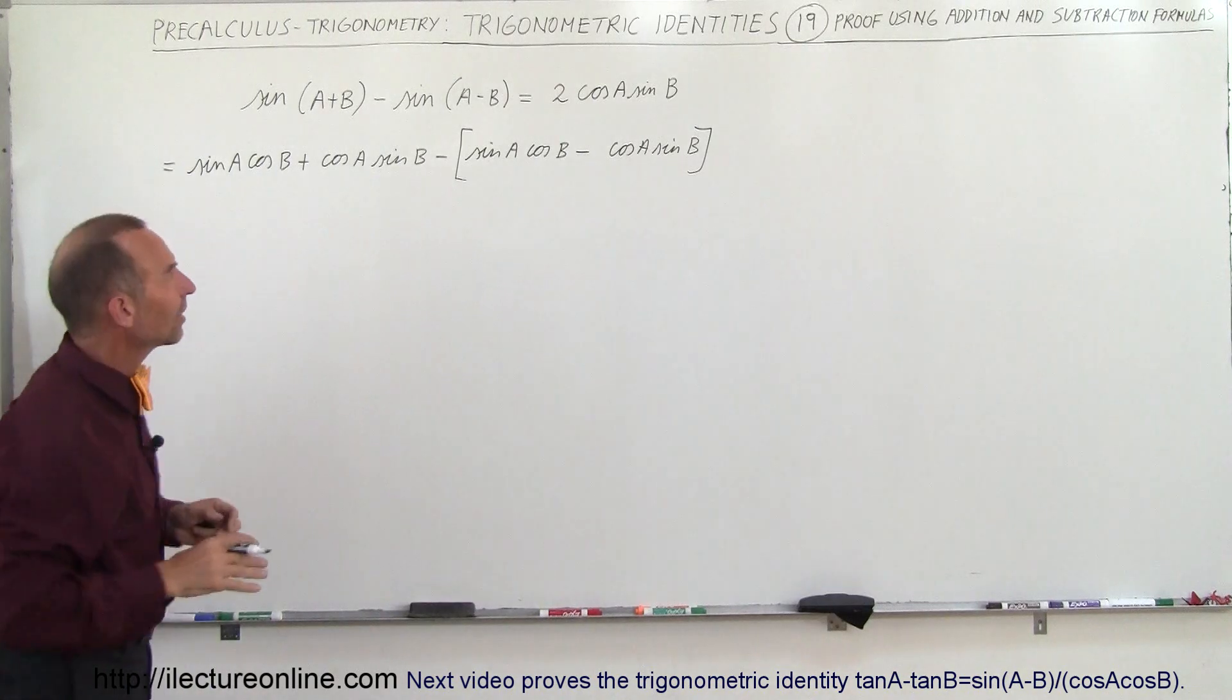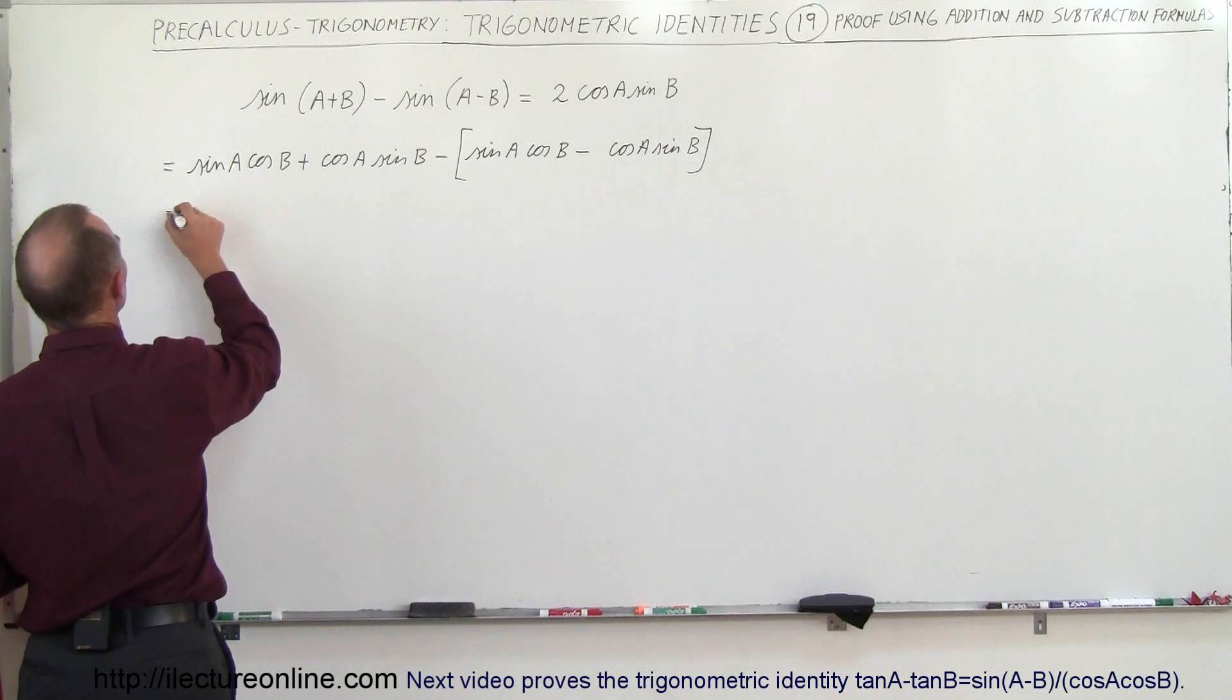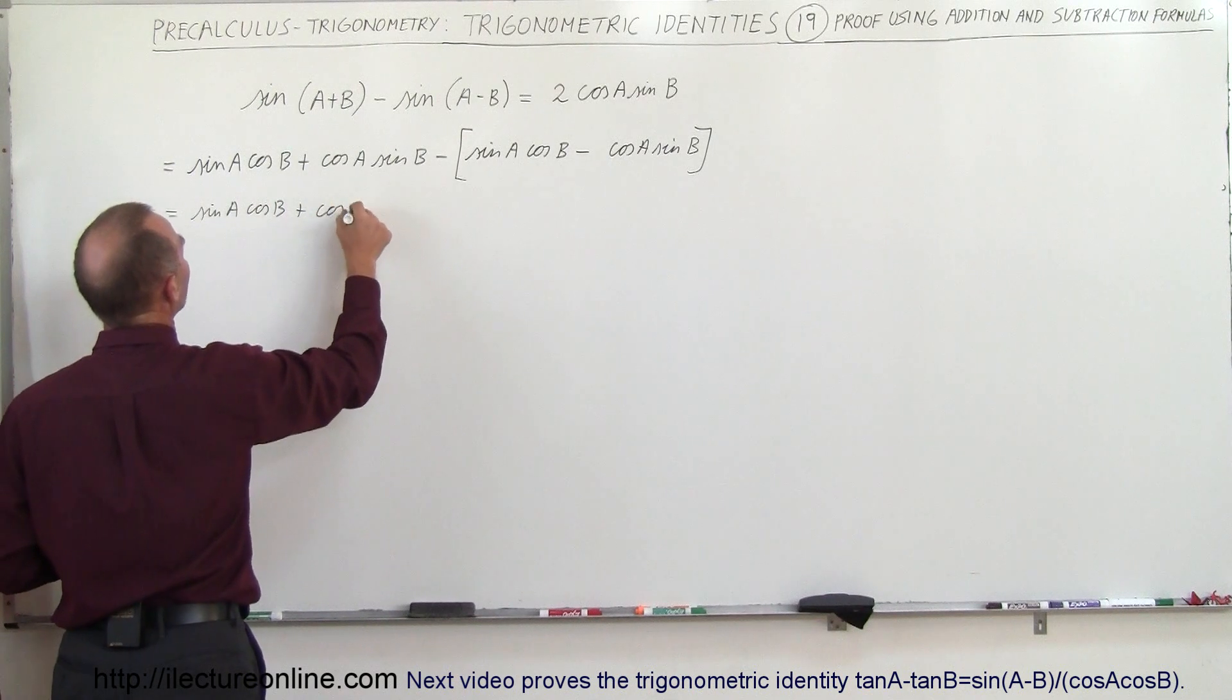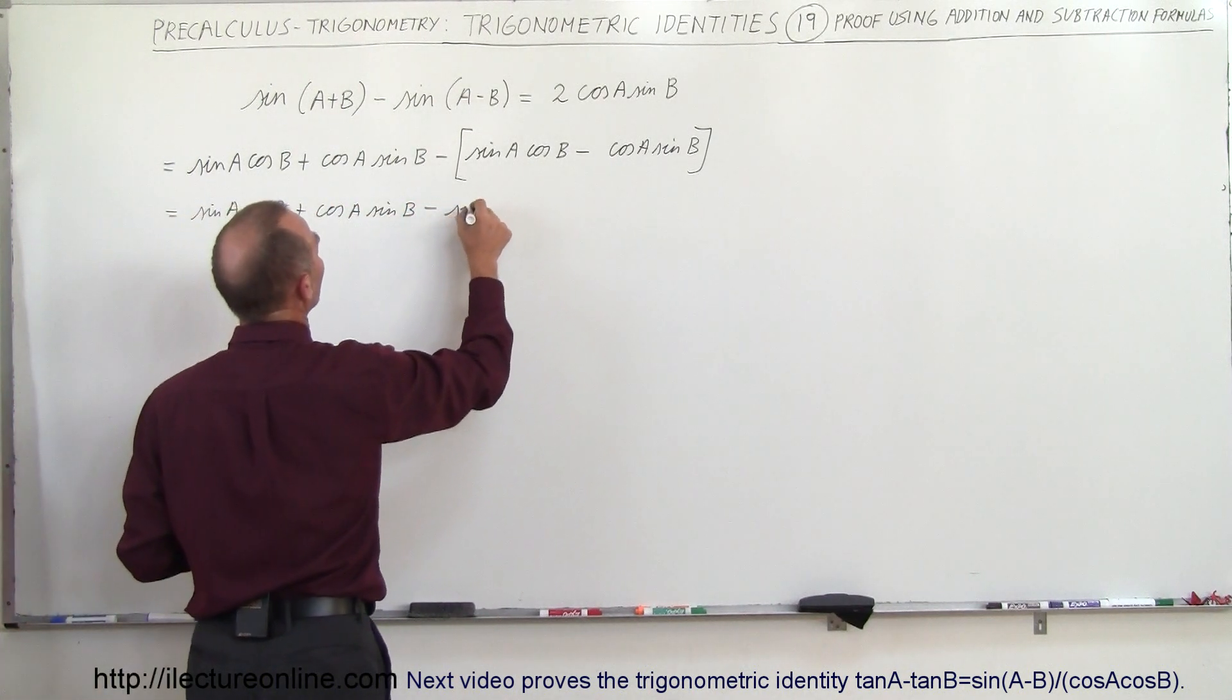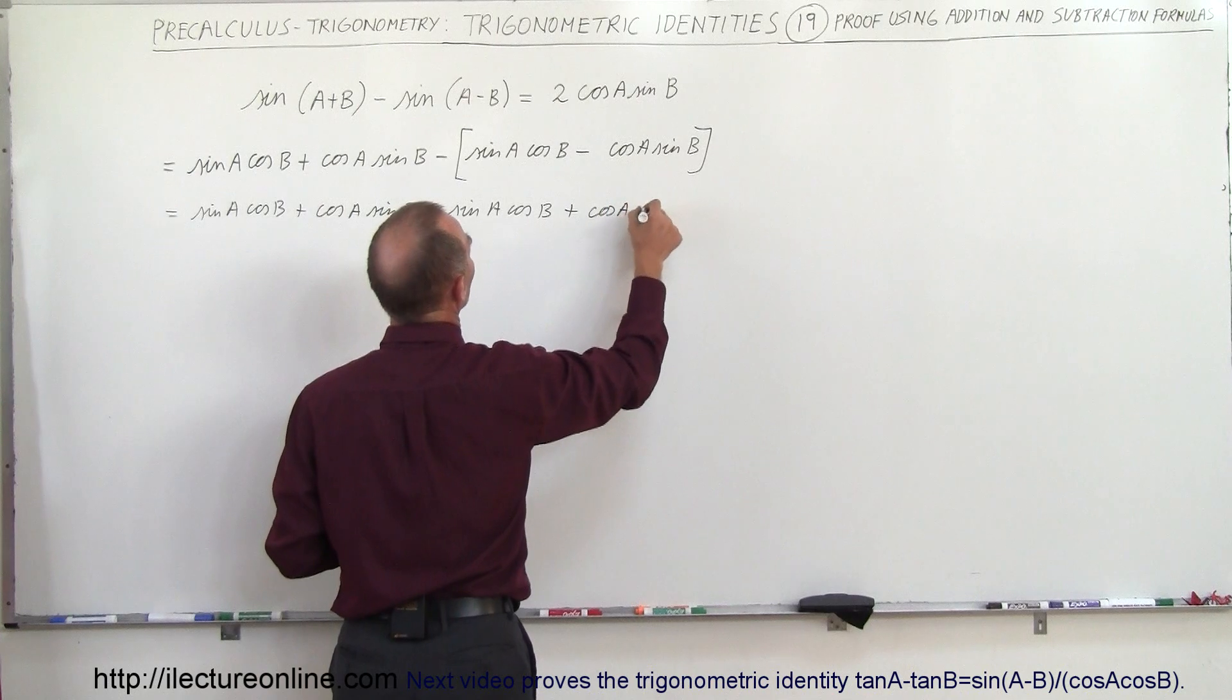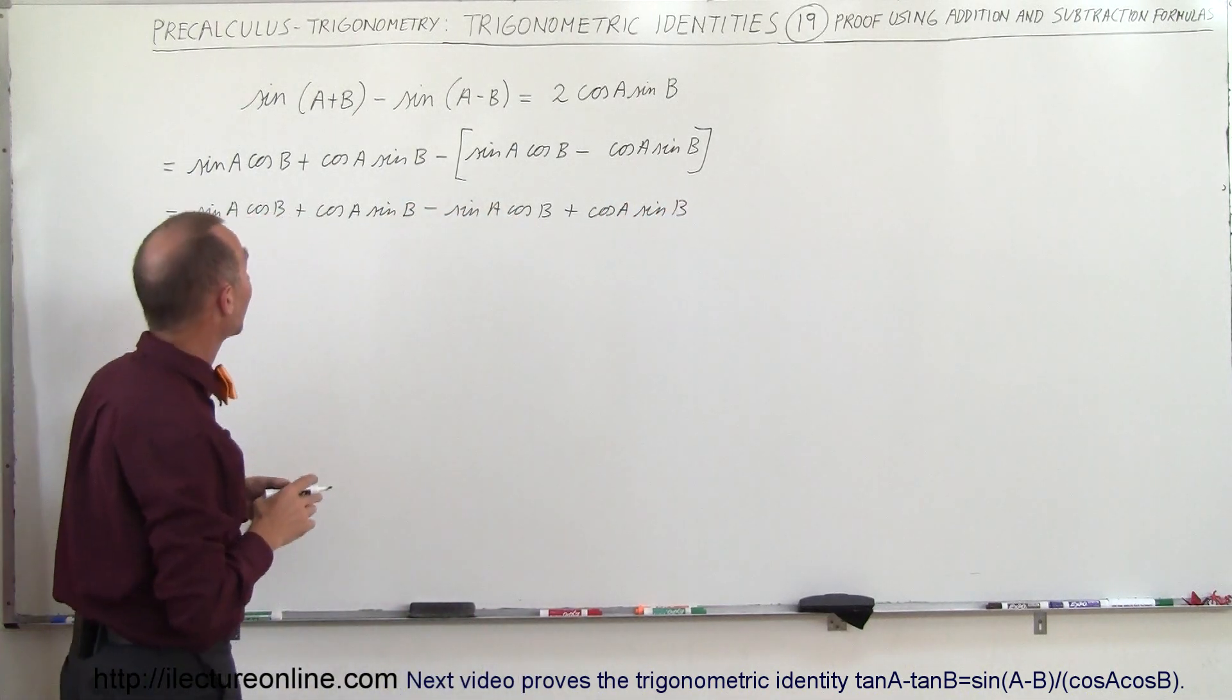All right, now let's simplify things a little bit. We're going to apply the negative sign and get rid of the brackets. So this would be equal to the sine of A times the cosine of B plus the cosine of A times the sine of B minus the sine of A times the cosine of B plus the cosine of A times the sine of B. Now that I have all the signs correct, let's see if anything simplifies.